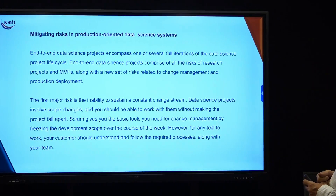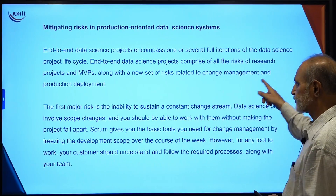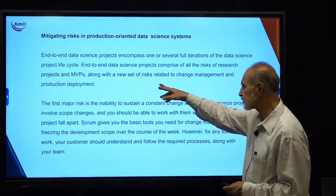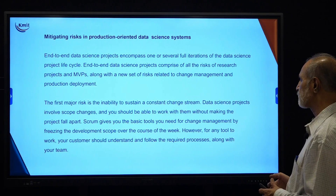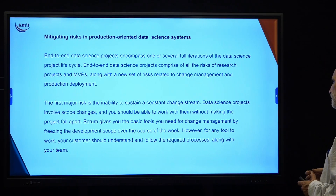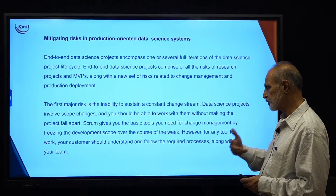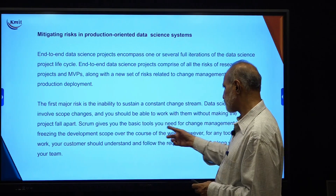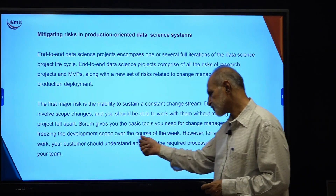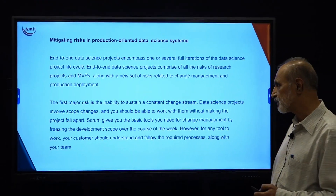End-to-end data science projects encompass one or more full iterations of the DS project life cycle. They comprise all the risks of research projects and MVPs, along with a new set of risks related to change management and product deployment. The first major risk is the inability to sustain a constant stream of changes. Data science projects involve scope changes that, over time, can make the project fall apart. Scrum gives you basic tools to manage change by freezing the development scope over the course of a sprint. However, for any tool to work, the customer should understand and follow the required processes along with your team.